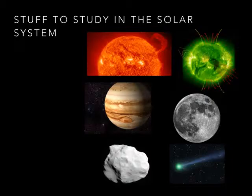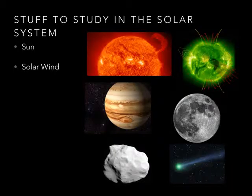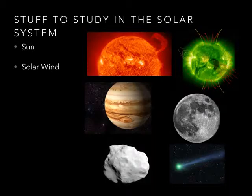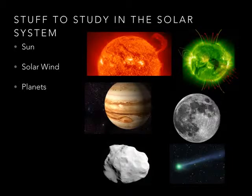What kind of stuff do they study in the solar system? Well, there's the Sun at the top. They study the Sun and the solar wind. Solar wind is not like wind on a windy day — there's no wind in space. But the Sun gives off particles, and that stream of particles is called the solar wind. Those particles can affect our satellites that control phones, GPS, and even airplanes.